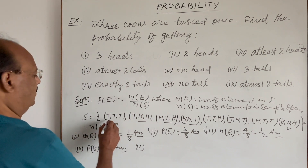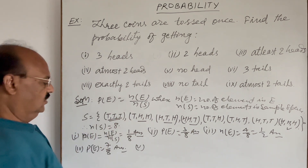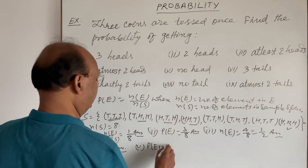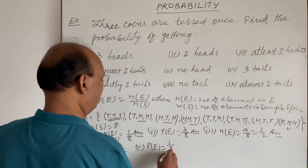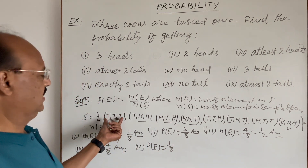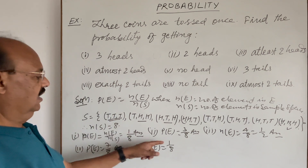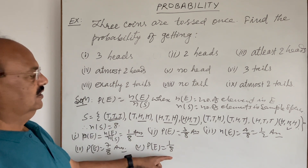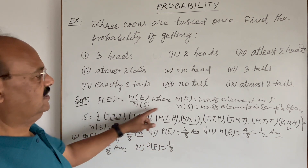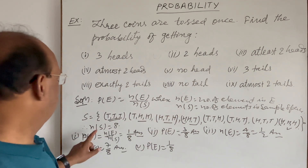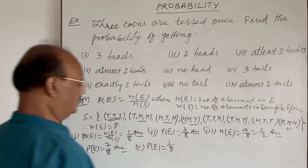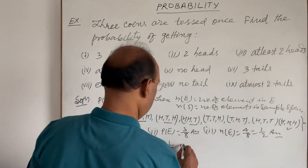Fifth part: no head. There is only one option here — T T T — so n(E) is equal to 1 and n(S) is 8. The probability of this event is 1/8.